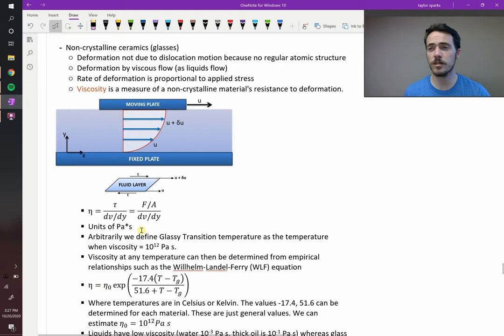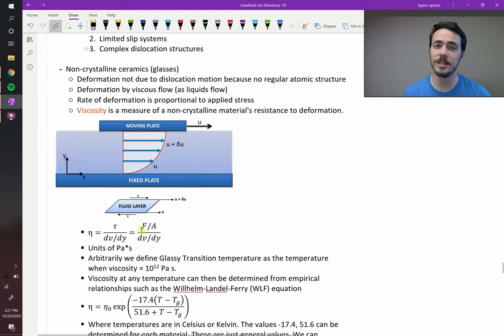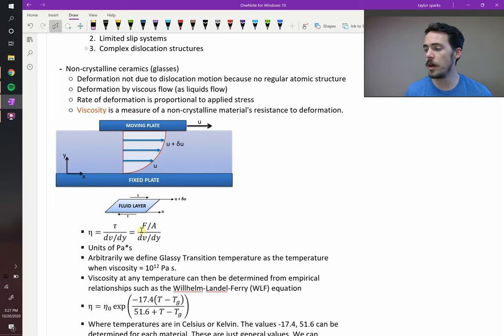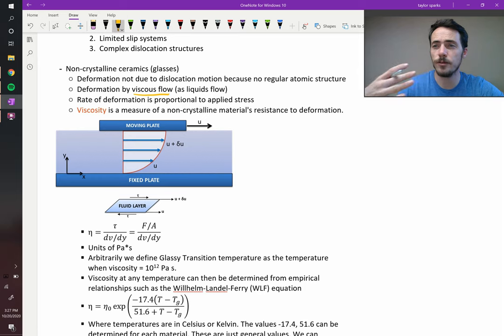Now, that's crystalline ceramics. What about non-crystalline ceramics, glasses? Well, when you heat them up, first off, there's not any sort of regular structure. So it's not like dislocations can slide through there. But you can get deformation from viscous flow. You heat something up, and now, just like a liquid can flow, your whole glass can flow in this molten state, essentially.